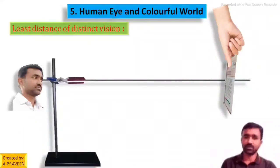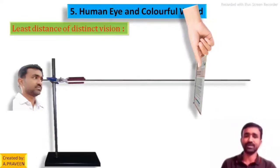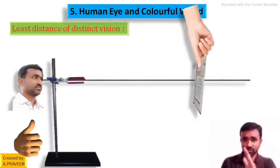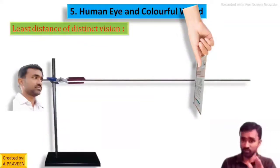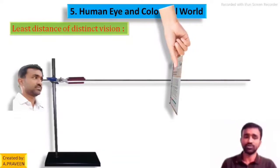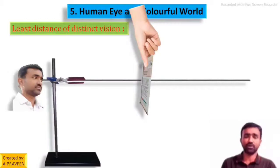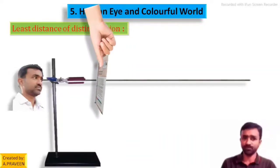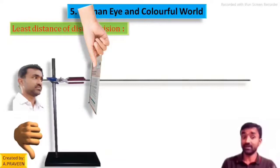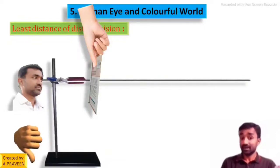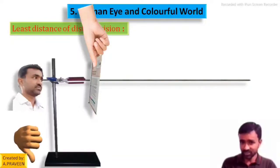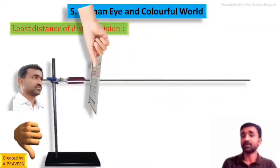Then bring the book somewhat nearer to the observer. Again ask your friend: is it visible or not? Yes, clear. Continue moving the textbook towards the observer. If he is unable to see, he will tell you he is unable to see. Wait for that response. The book is brought somewhat nearer — at this distance the text on the book is not visible clearly and becomes blur.